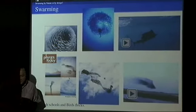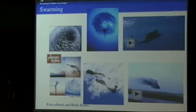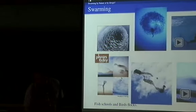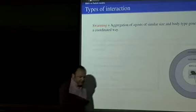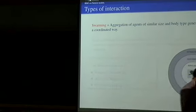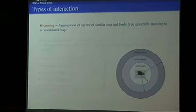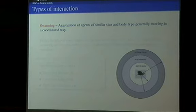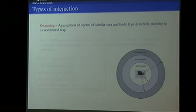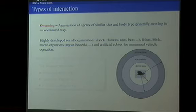The idea is that what we would like to model is this collective behavior, the overall motion of this larger set of individuals. This is more or less the definition of swarming. Swarming refers to the aggregation of individuals of similar size and body type that generally move in a coordinated way. This is something that has been observed in many species.